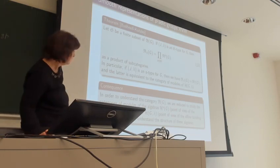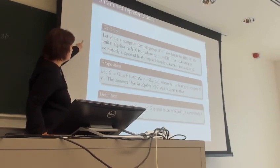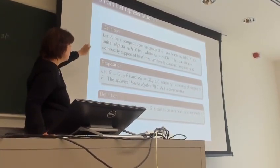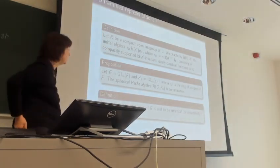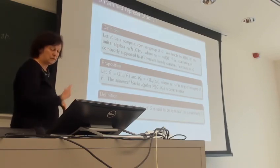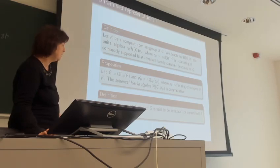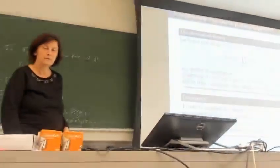Tomorrow we will first look at the case of unramified representations — not a type but still very interesting — specifically the algebra of functions that are bi-invariant by the maximal compact subgroup. Then I will stop there. Thank you, are there any questions?